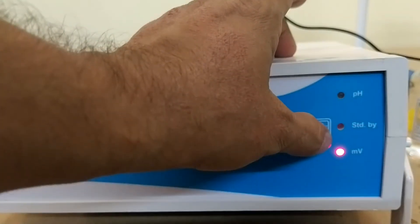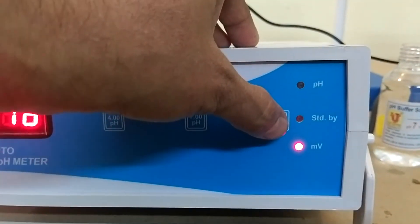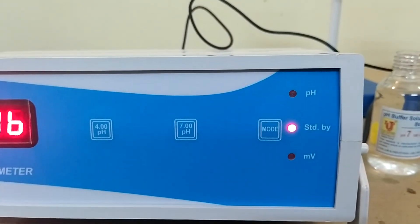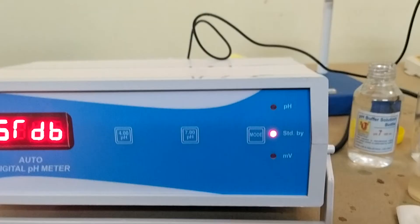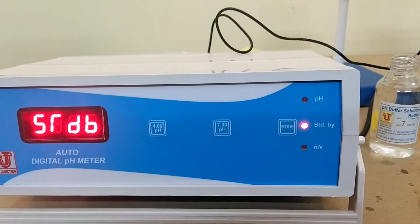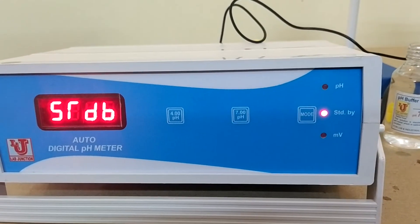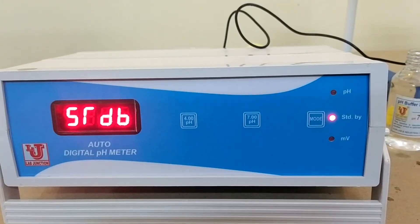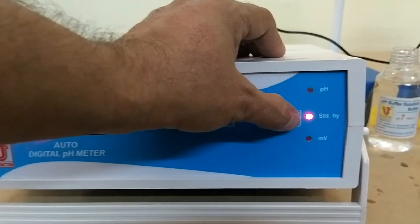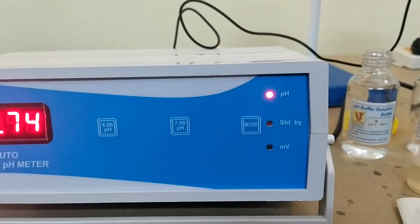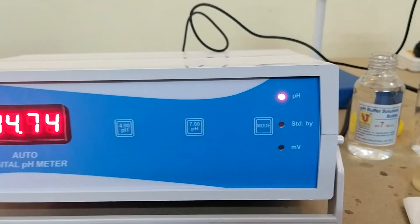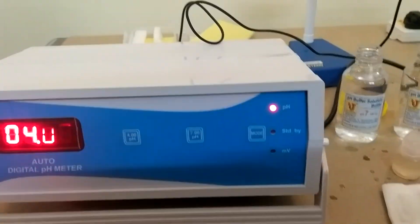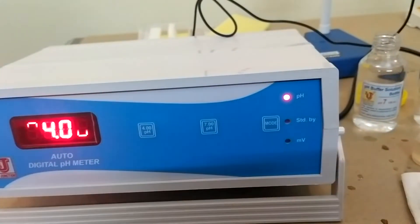Now, if your work is done, then always put the auto digital pH meter on standby mode. When you again take analysis, you can switch on the mode to pH. This is the final demonstration of lab junction auto digital pH meter.